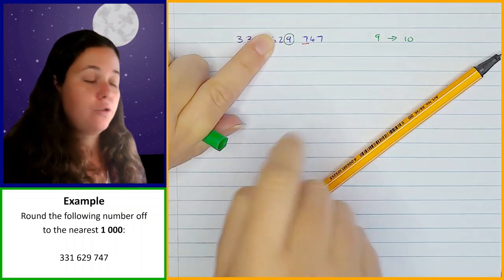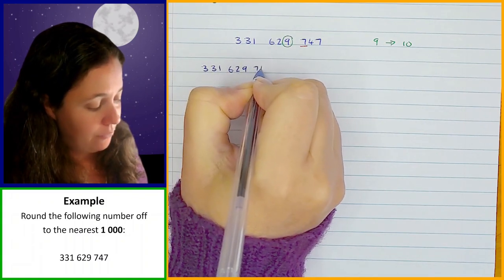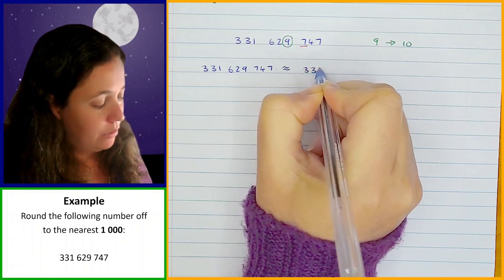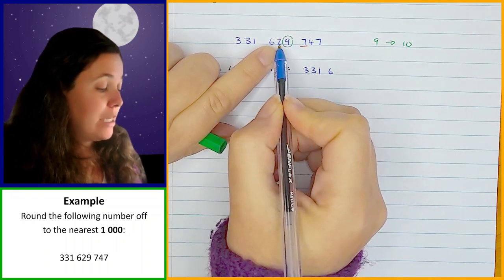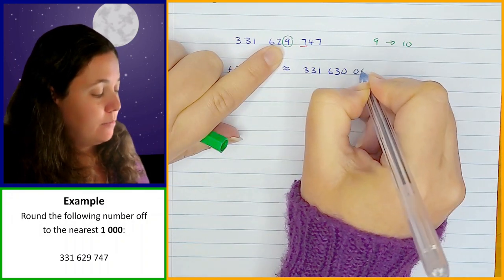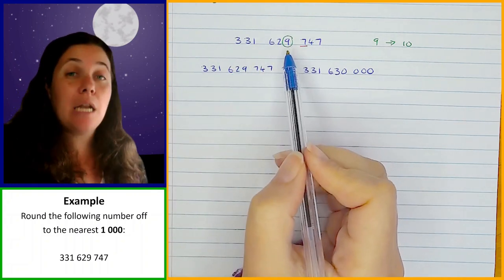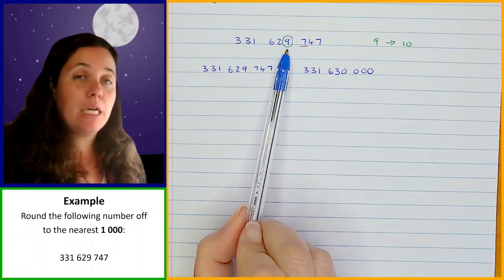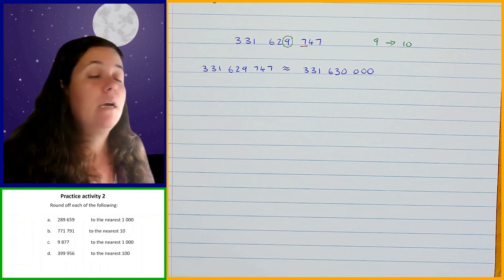When a nine changes to 10, the nine actually changes to zero and the digit in front of the nine goes up one instead. So what's happening here is 29 goes up to 30 — the two goes up one to three. So I end up with 3,316,330,000. You need to be careful: when the digit in the rounding position is a nine and it needs to go up one, change the digit in front of it up one and change the nine to a zero.